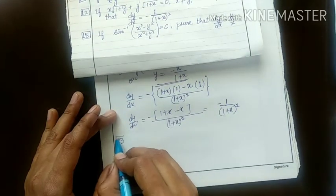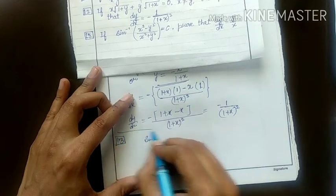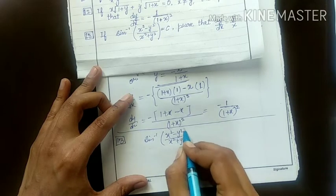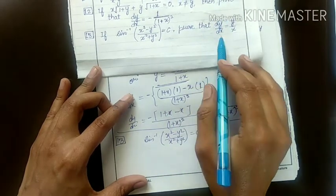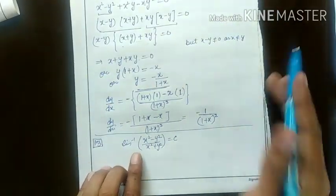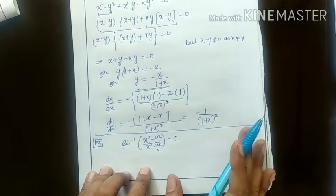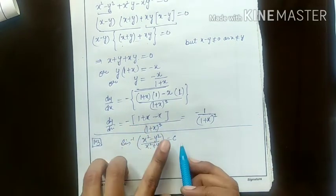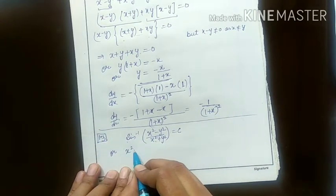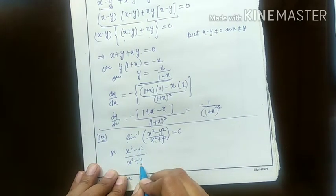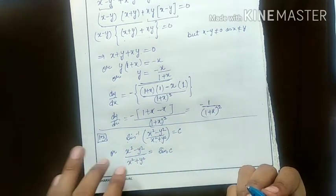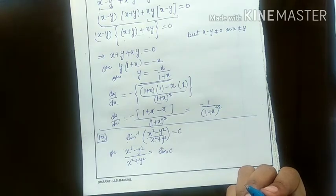Last example is 13. Given: sin inverse of (x square minus y square) upon (x square plus y square) equals c. You have to prove dy by dx equals y upon x. Direct differentiation will be very long. Use a substitution approach: move sin to the other side, so (x square minus y square) upon (x square plus y square) equals sin of c. Now differentiate both sides.